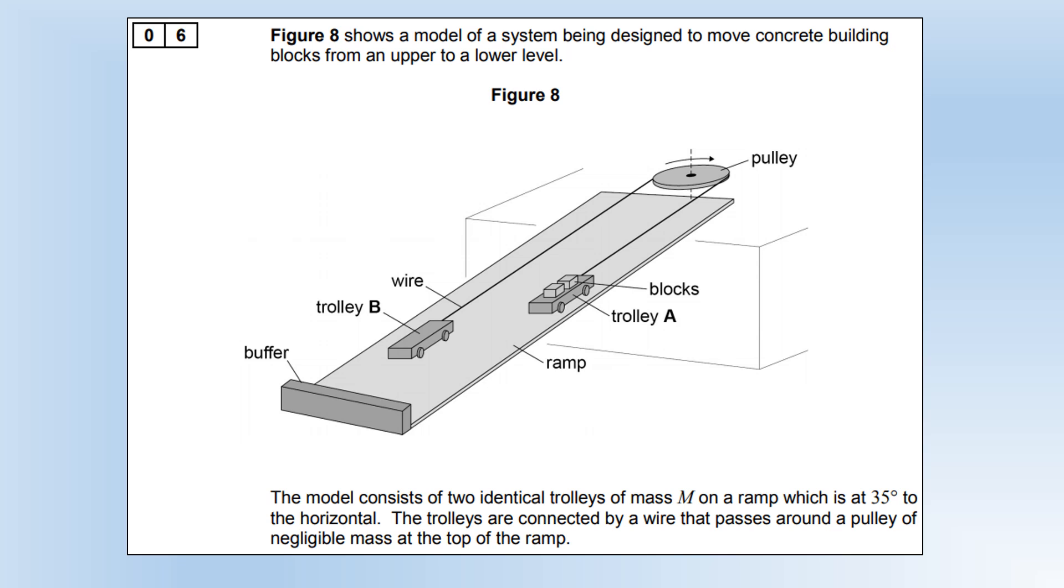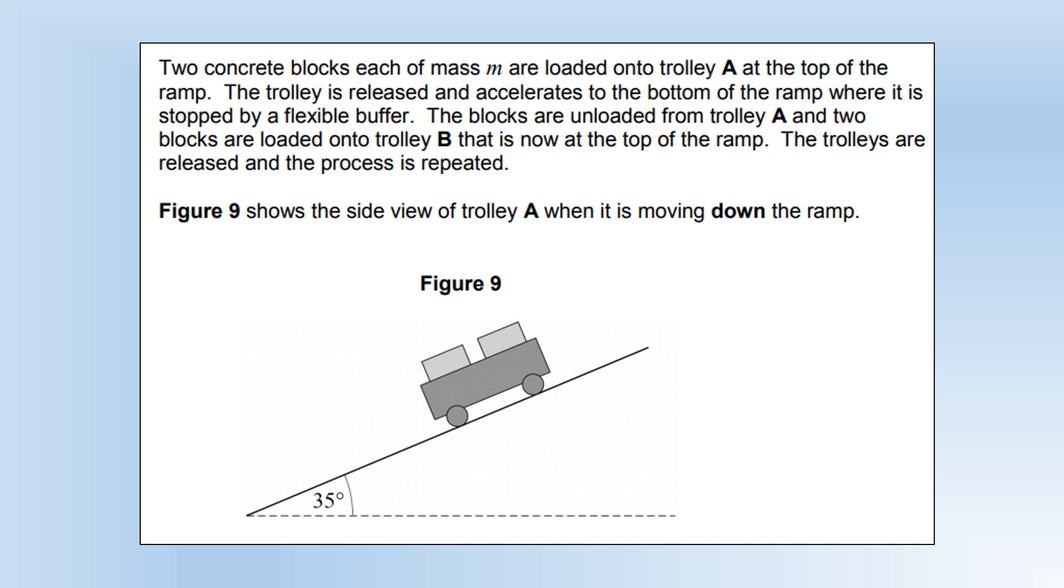Moving on to question 6, we've got a model of a system designed to move concrete building blocks from an upper level to a lower level. The model consists of two identical trolleys of mass M on a ramp 35 degrees to the horizontal. The trolleys are connected by a wire that passes around the pulley of negligible mass at the top. The two blocks have a mass m; they're loaded onto trolley A at the top of the ramp. The trolley is released and accelerates to the bottom of the ramp where it's stopped by a flexible buffer. The blocks are unloaded from A and two blocks are loaded onto trolley B that is now at the top of the ramp. The trolley is released and the process is repeated. Essentially, each truck is going to pull the other one up as it goes down the ramp.